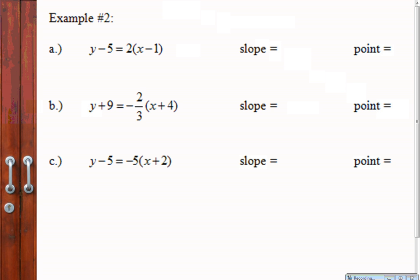All right, time to check it. Your slope, the multiplier, is 2 or you can write 2 over 1. Your point here is going to be (1, 5) - that's minus negative 1. For your slope for the second one, negative 2/3. Your point is going to be (-4, -9). Your slope from the last one is negative 5, you could also write negative 5 over 1, and your point is going to be (-2, 5).